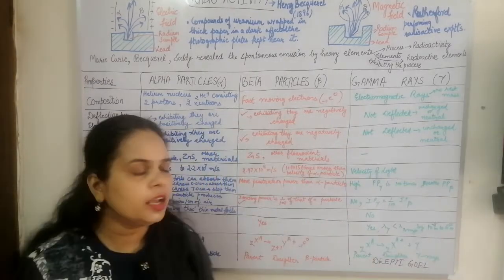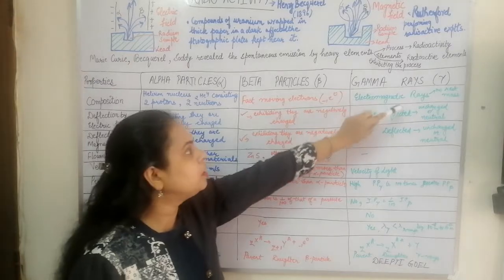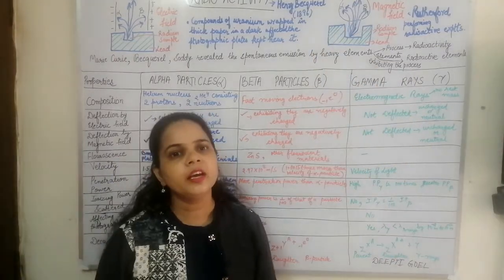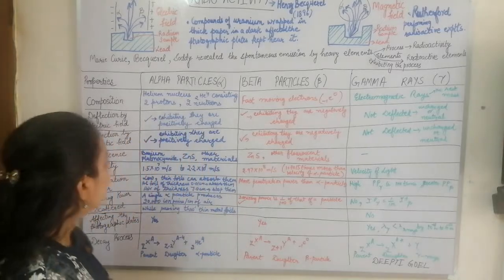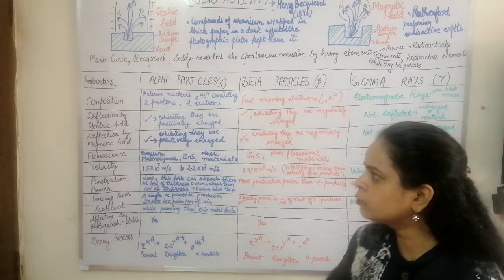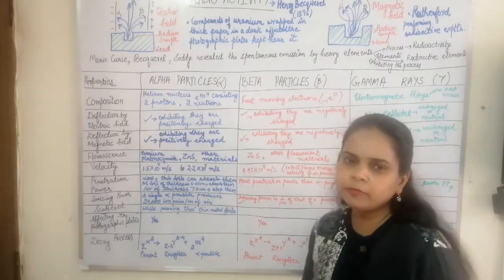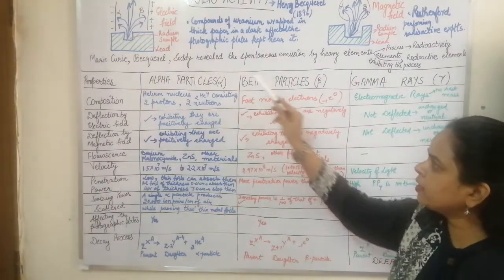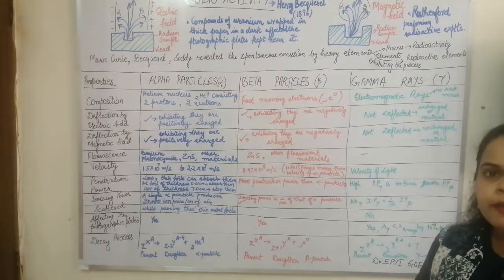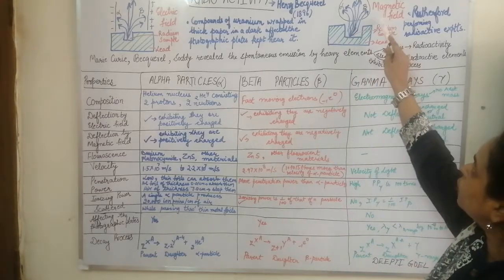Gamma rays are neutral — they are electromagnetic rays with no charge and no rest mass. Regarding deflection by electric and magnetic fields, both alpha particles and beta particles are deflected by electric and magnetic fields, as was proved by Rutherford's experiment.